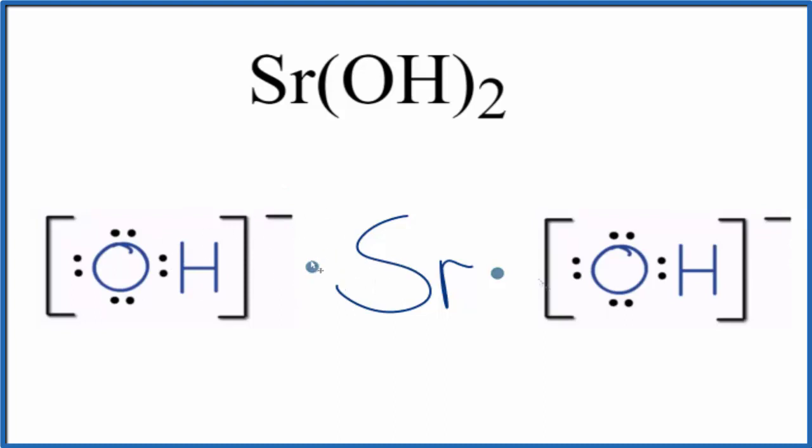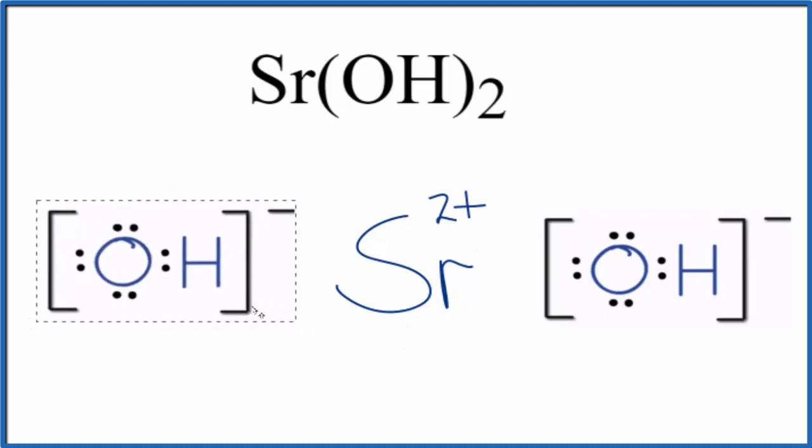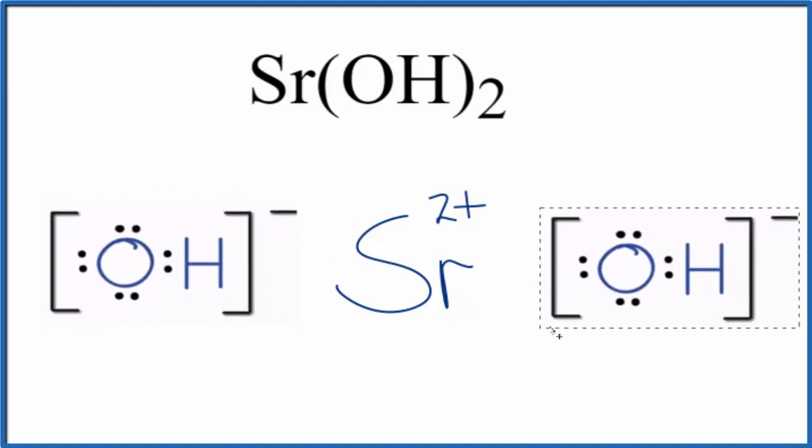And because strontium has lost two electrons it has a two plus ionic charge, and our positive strontium that's attracted to the negative hydroxides, they form the ionic bond. This is the Lewis structure for Sr(OH)2.